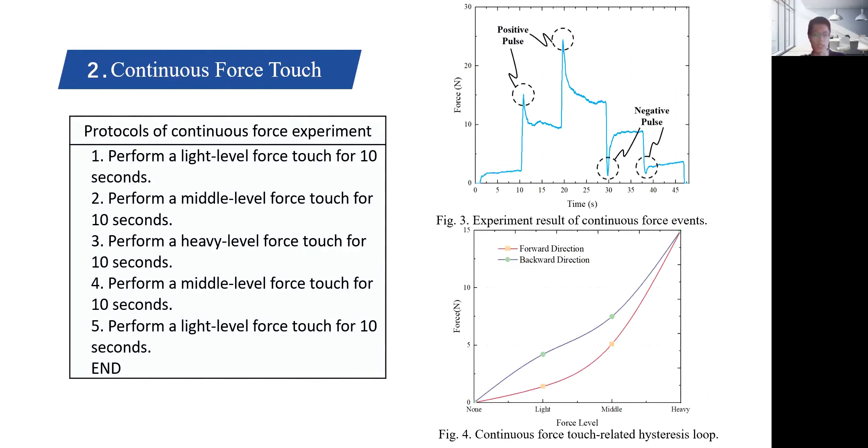Next, we detect the continuous force, in which the static force behaves differently. Similar to the measurement steps of the discrete force touches, the time interval between two different force levels is cancelled, and the static force level is continuously applied from light to heavy and then to light. It demonstrates that the pulse still appears during the perversion of force level.